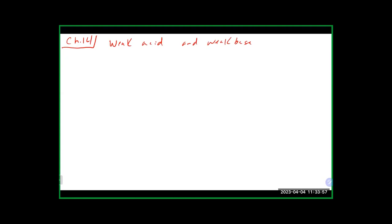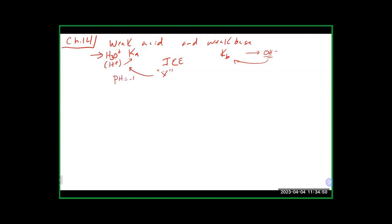Remember that if we are looking to find the pH of either a weak acid or weak base, it is going to be an equilibrium problem. You do need to do an ICE table. We want to make sure we use our Ka value when dealing with a weak acid and our Kb value for a weak base. If you have H3O+ or H+ on the product side, it should be a Ka value. If you have OH- on the product side, you should be using a Kb value.